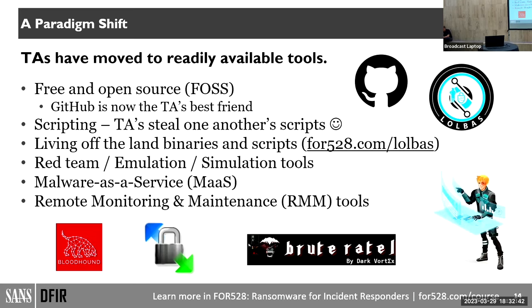Rather, threat actors realized they could just go to GitHub and get a ton of tools and use those. I've seen Mimikatz — your favorite neighborhood password-stealing tool that attacks the LSASS process and memory space in Windows — in so many ransomware attacks. Many times you'll see it labeled as 'mimikatz_trunk.zip,' meaning they downloaded it right from GitHub. Sometimes they'll get in, open a browser, go to GitHub, and mistype the name of Mimikatz. They also love using scripts that leverage tools they've brought in or that are already in the environment.